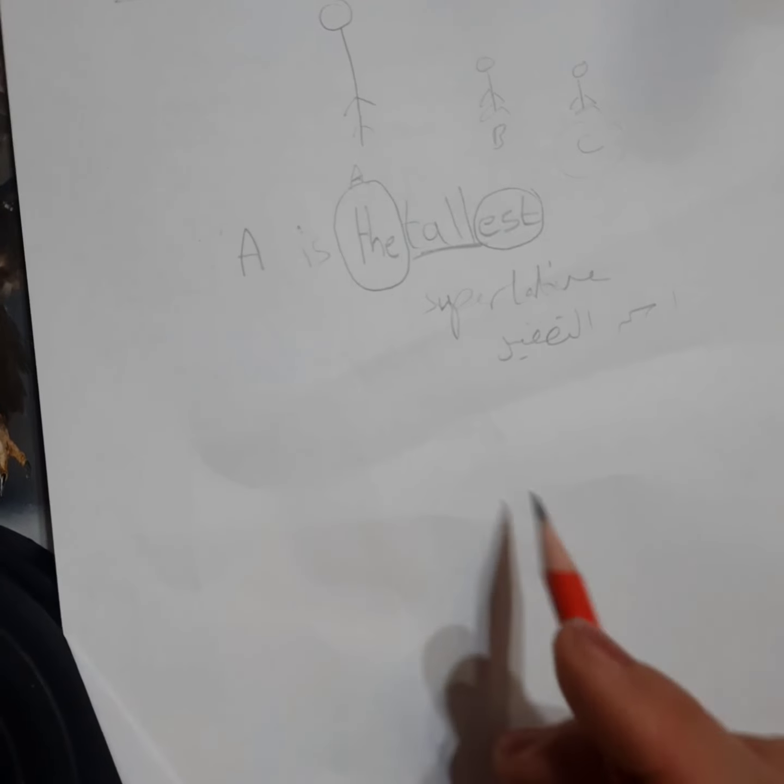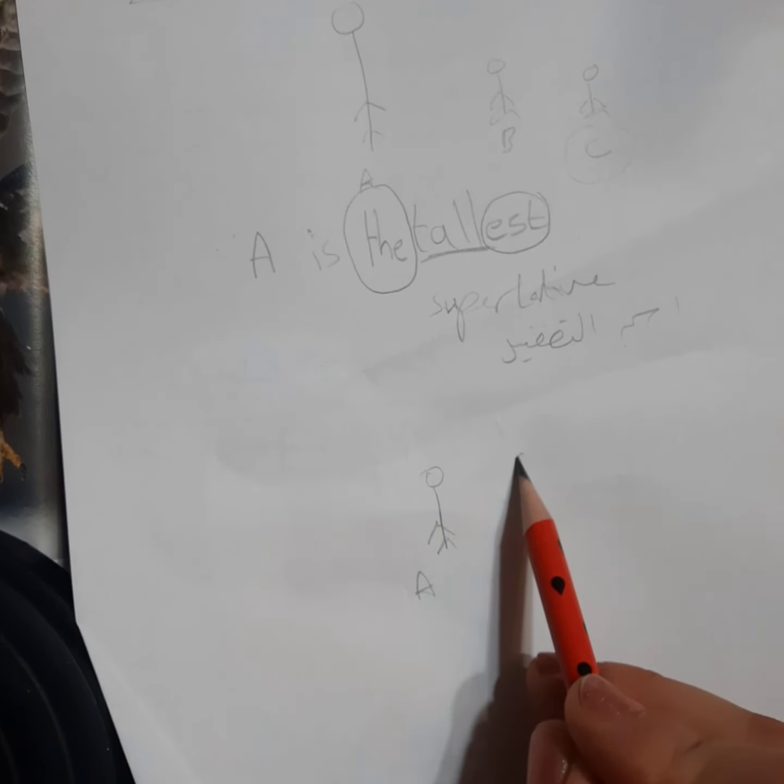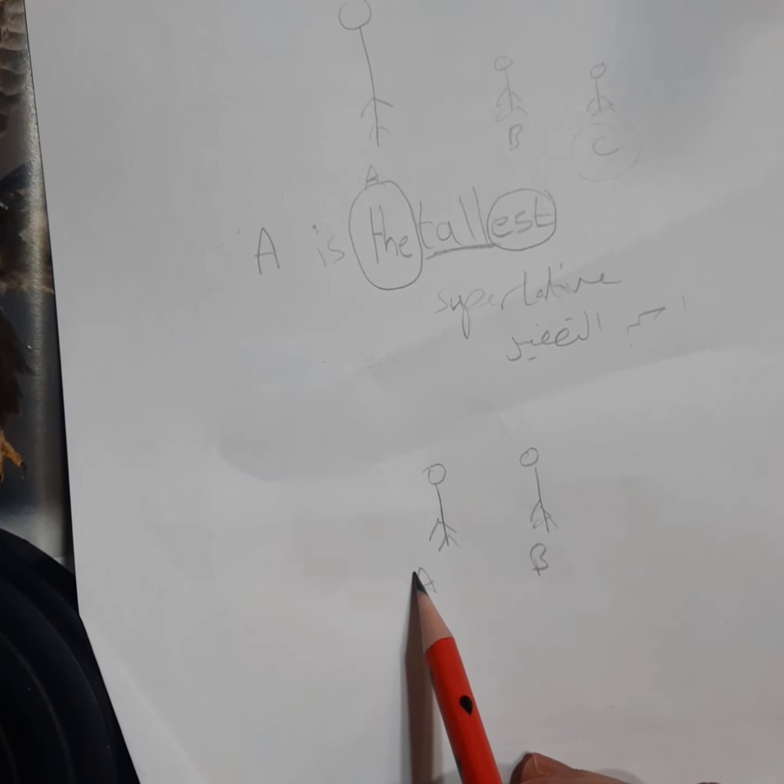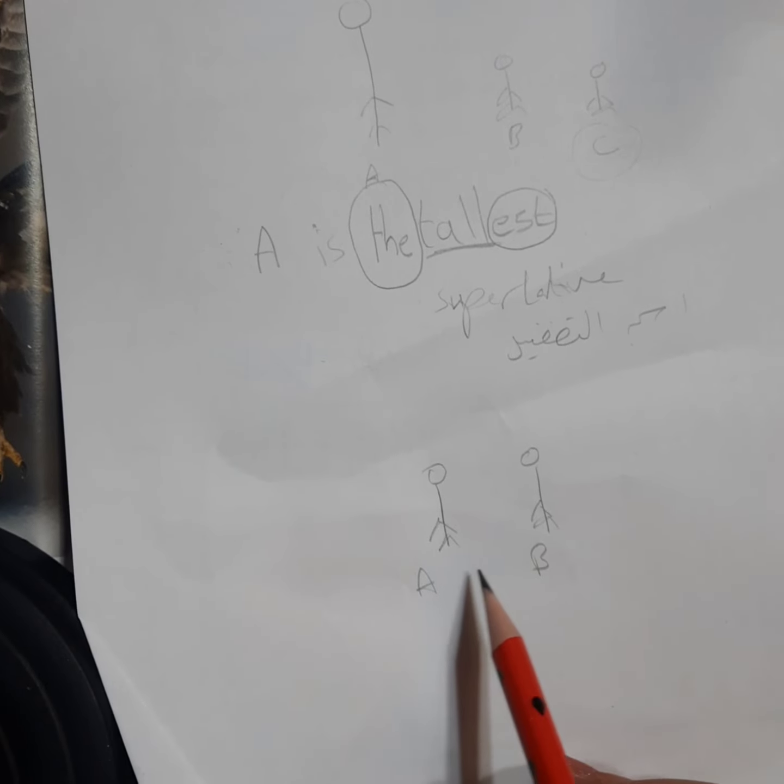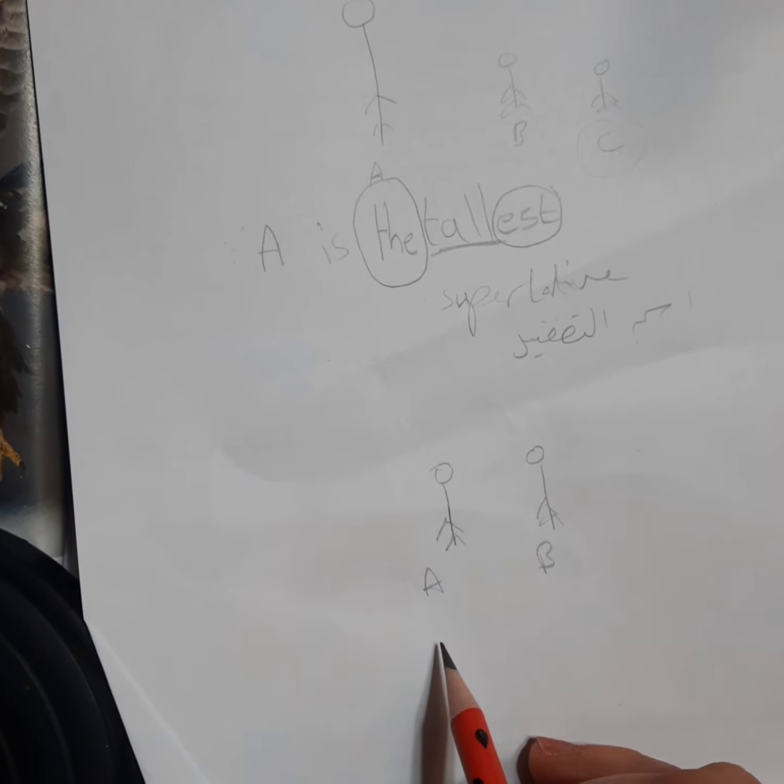هلا إذا في عندي حالة زي هيك: هذا A وهذا B. You can see that A has the same length as B. يعني A عنده نفس طول تبع B. شو بدنا نساوي بهاي الحالة?